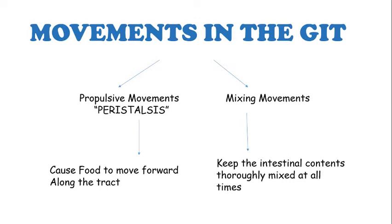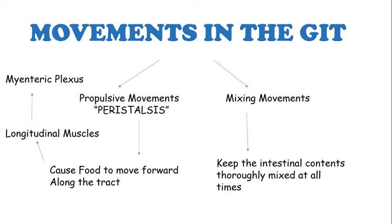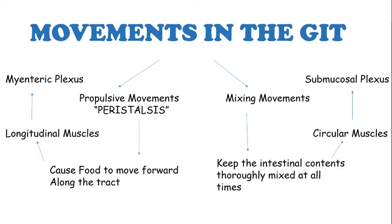If you had taken our previous lecture on the enteric nervous system, it might be easy to imagine that peristaltic movements are produced by the longitudinal muscles, which are under the control of the myenteric plexus, whereas mixing movements are produced by the circular muscles, which are under the control of the submucosal plexus.